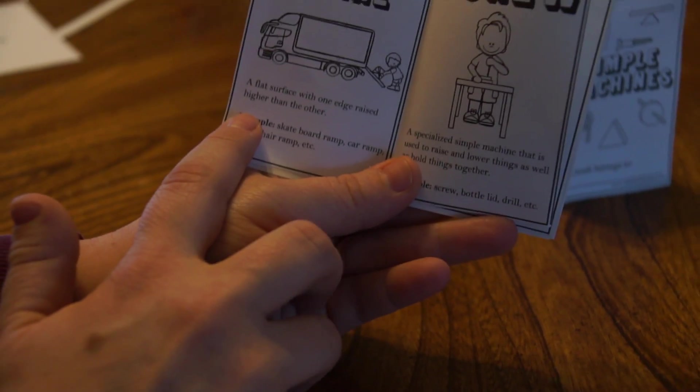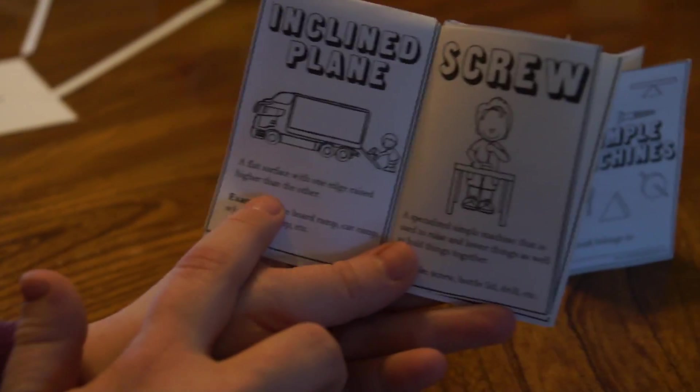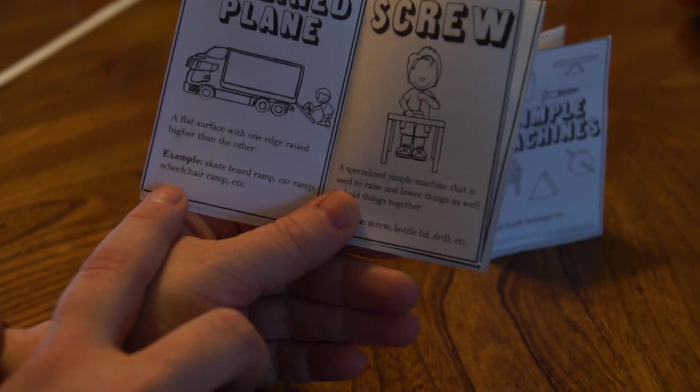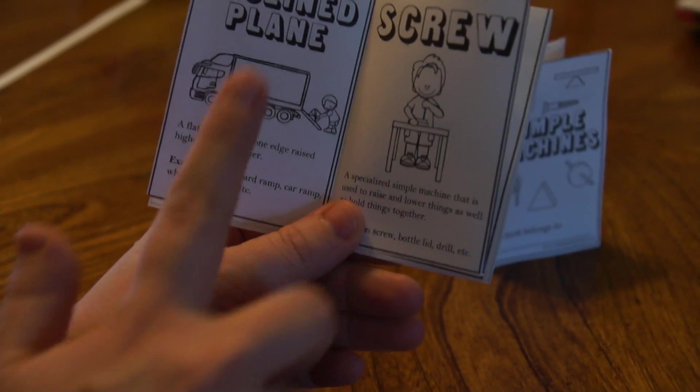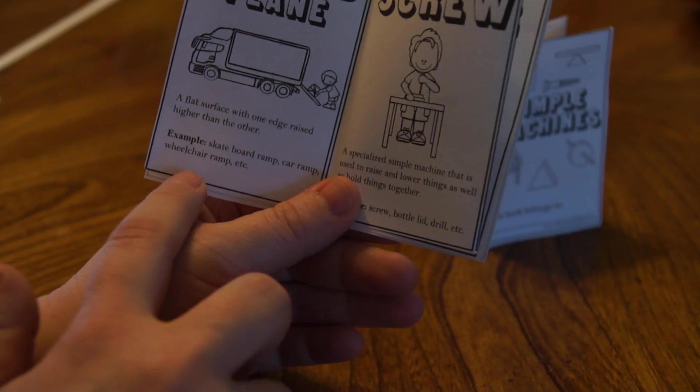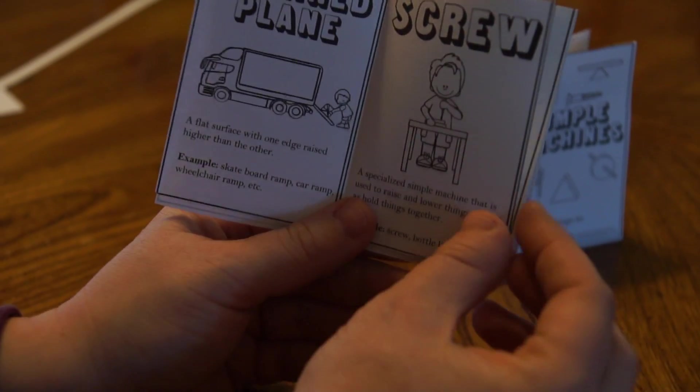An inclined plane is a flat surface with one edge raised higher than the other. Then it gives an example. So a skateboard ramp would be an example of an inclined plane, a car ramp, a wheelchair ramp—just giving kids examples.